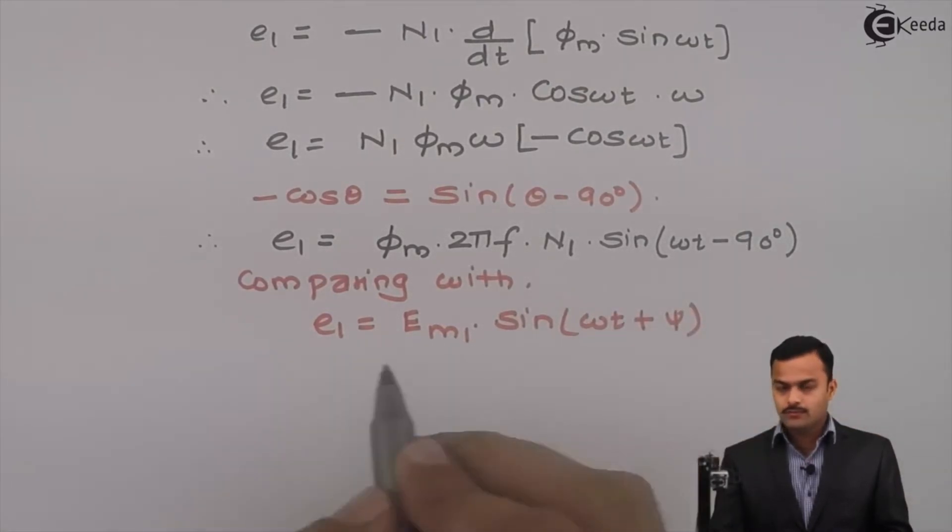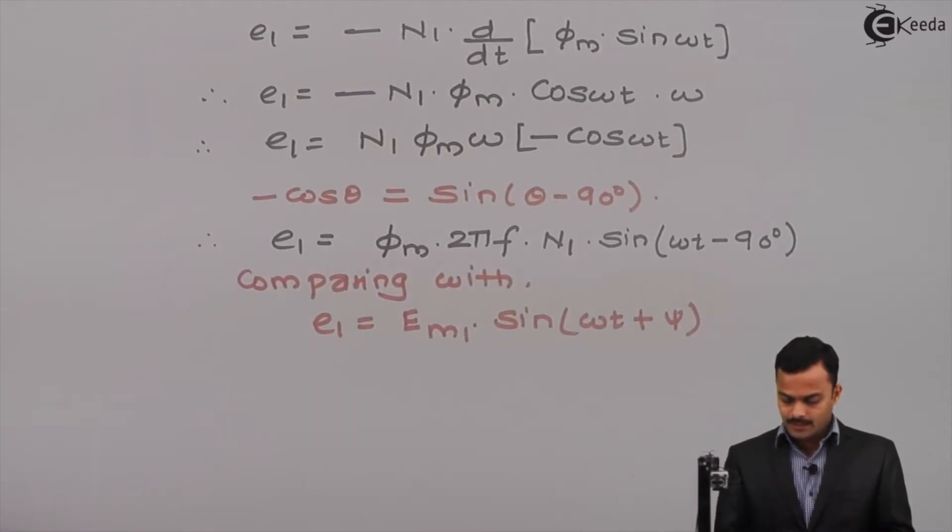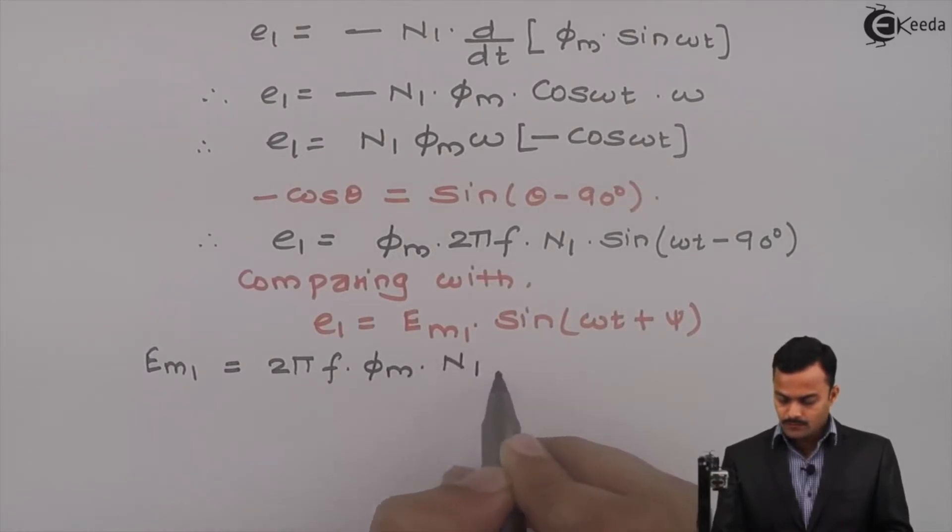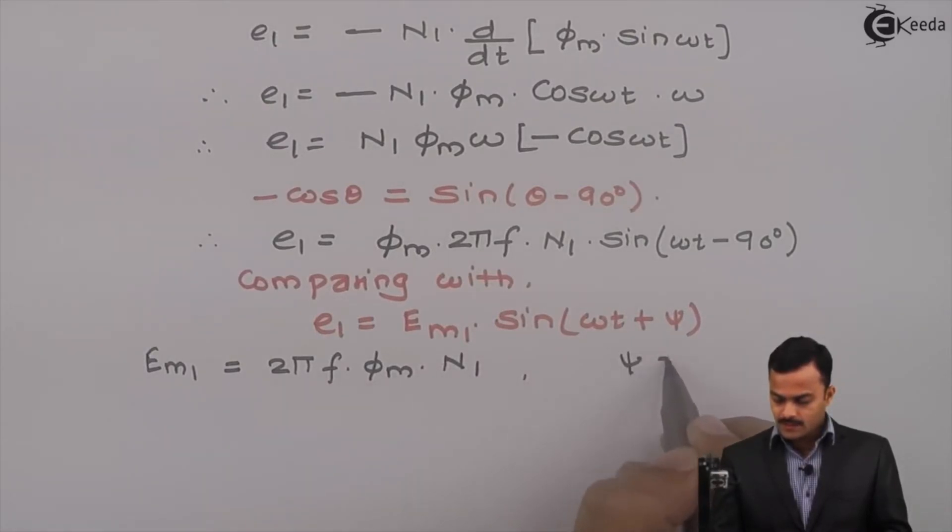I will not use the value phi because that we have already used for flux. This will be the symbol psi. If I compare, I will get E m1 equal to 2 pi f into phi m into n1, and psi equal to minus 90 degrees.